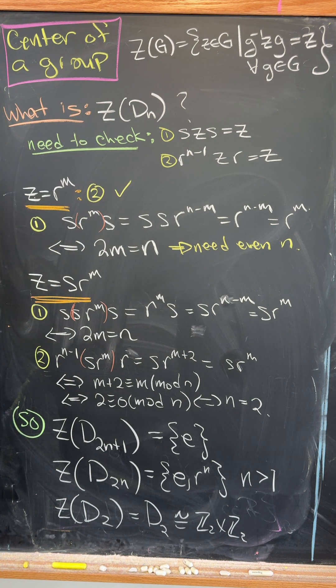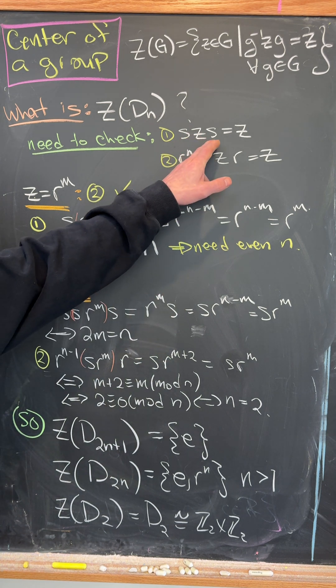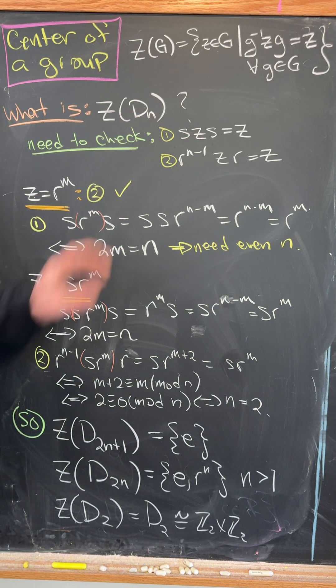So let's see, to check the center of the dihedral group, we need to find elements that commute with each of the generators R and S. So it comes down to these two equations.